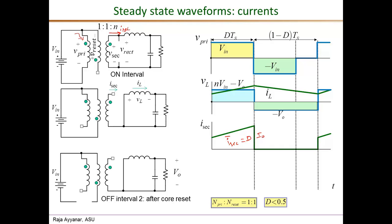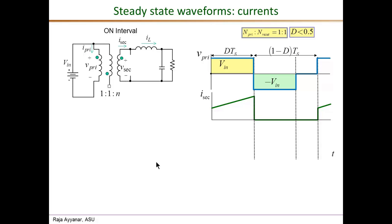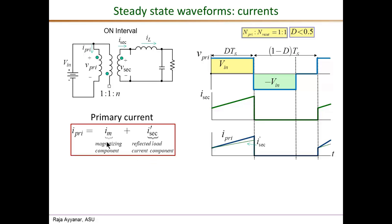The primary current consists of two components: the magnetizing current i_m, and the reflected load current component i_secondary_prime. The reflected load current component cancels the flux produced by i_secondary, and is given by i_secondary_prime equals N times i_secondary by transformer action. We must also be careful about dot polarities: i_secondary should leave the dot, and i_secondary_prime should enter the dot on the primary side. The thin green line in the plot shows i_secondary_prime, which has the same wave shape as i_secondary during the on interval but scaled by N.